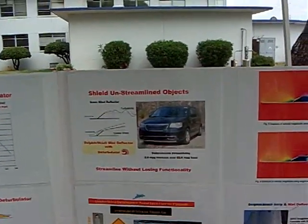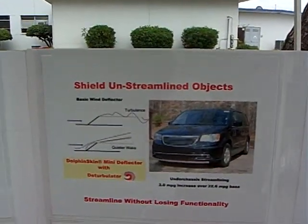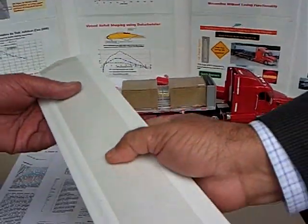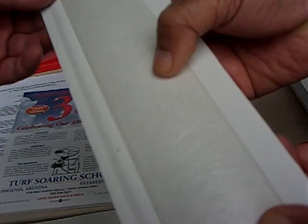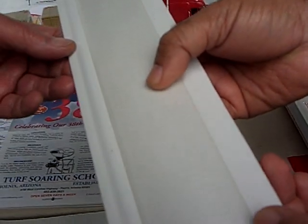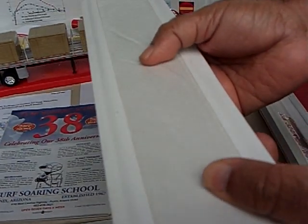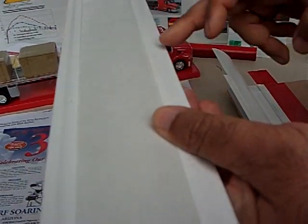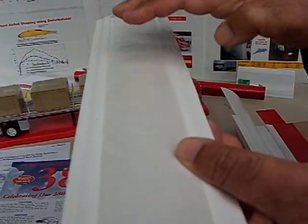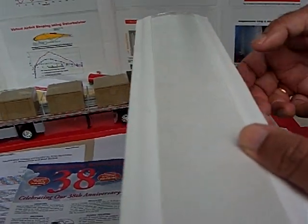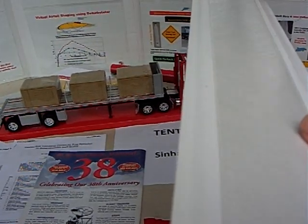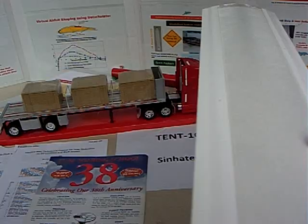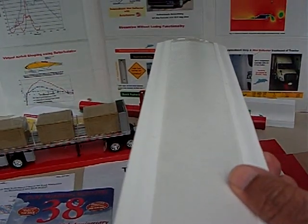What we do is use a flexible skin — that's an essential part of the de-turbulator. If you expose this flexible skin to airflow, it will try to flutter like a flag. What fluttering means is you see a whole bunch of traveling waves going across the surface.